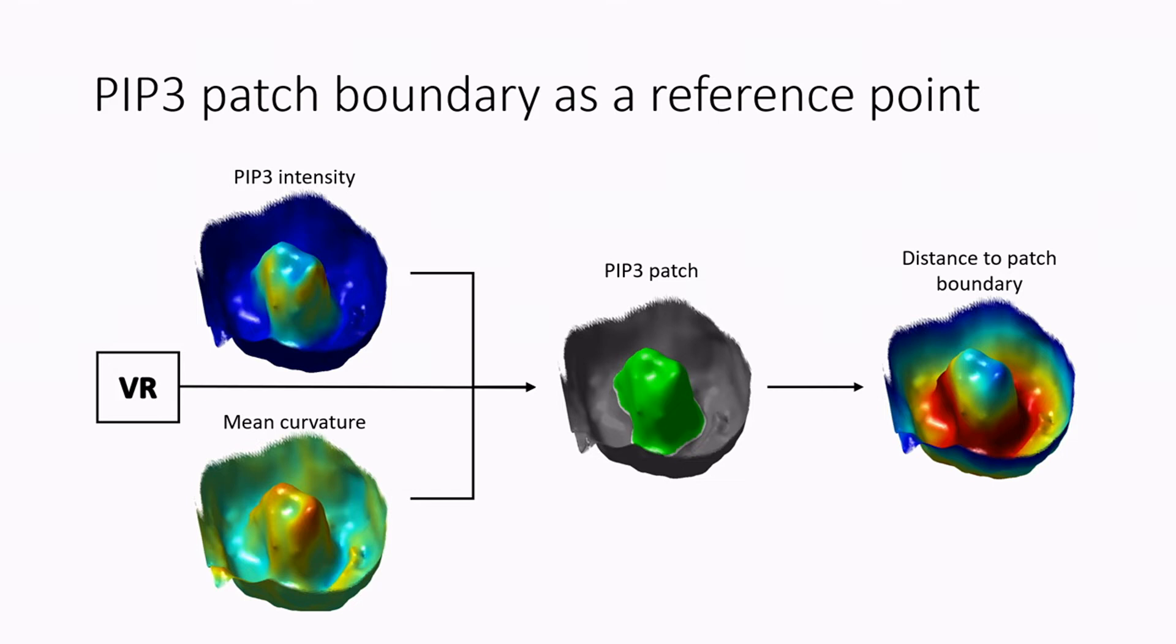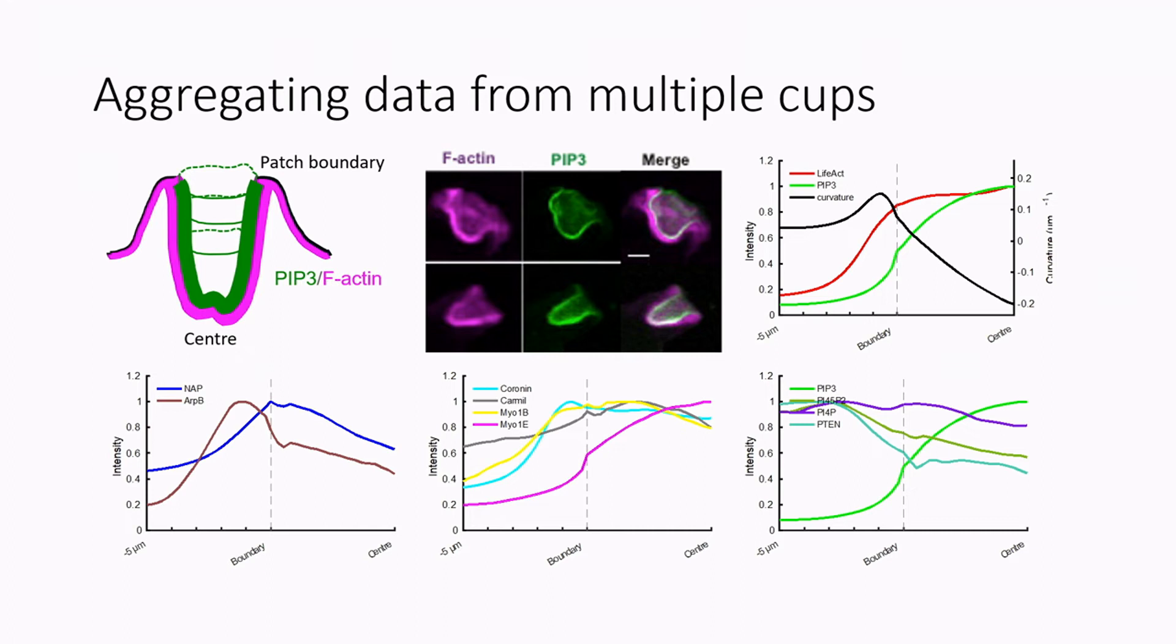So when we segment the patch, we then look at the actual distance map. And when you see these, we kind of get these distance bands which, what we do is we just average fluorescence values around those bands. And then we've kind of gone from 3D initially to this 2D surface, and then if we average around the distance bands, then we're down to 1D and it's nice and easy to actually understand.